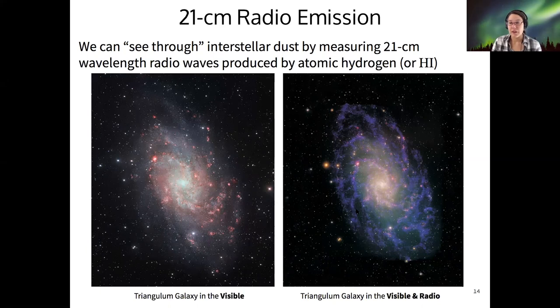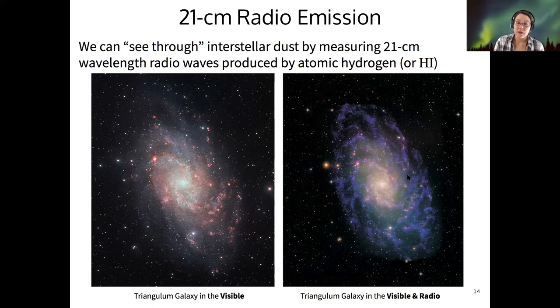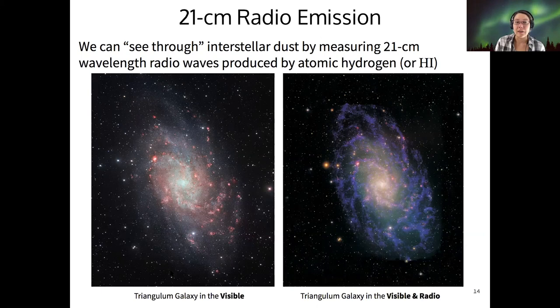Then it's color-coded here in purple. And now we can very clearly make out the spiral arms of the Triangulum Galaxy, whereas they were a lot fainter and harder to detect here in the visible.